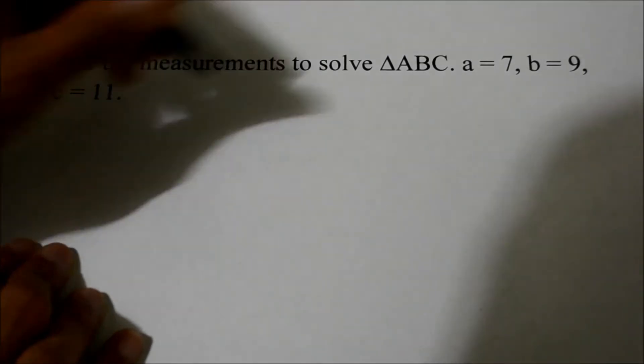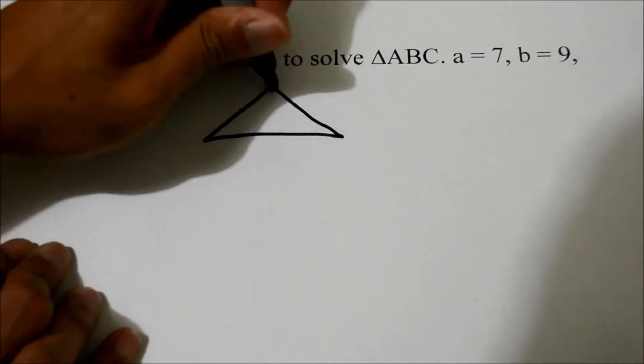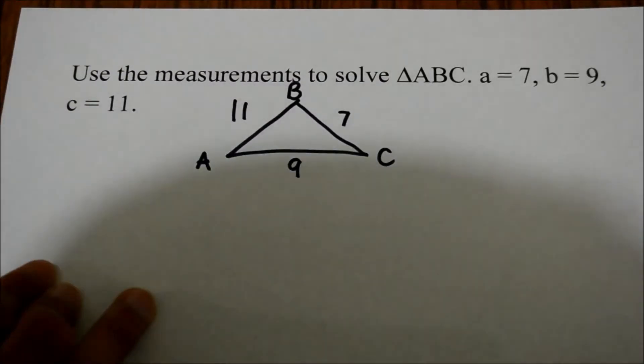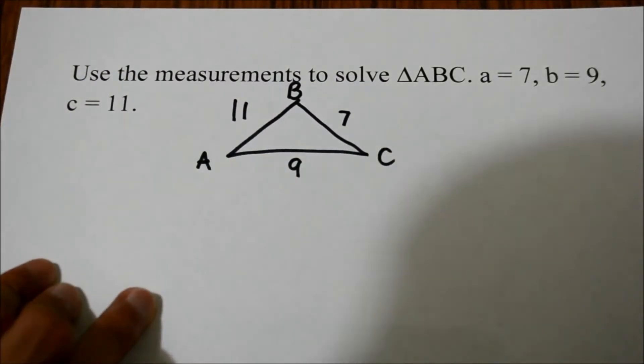We can illustrate a triangle and place these measurements where they belong. Our objective here is to find all angles between the side lengths, and we can do that by using the law of cosines as well as the law of sines.